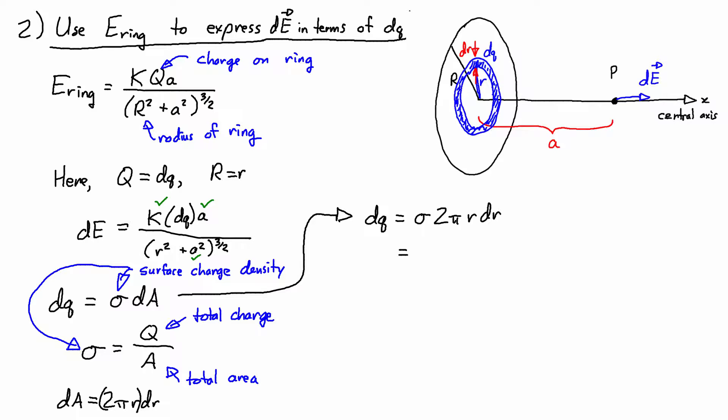When I put these together, I get that dq is equal to sigma times 2 pi r dr. And if I'd like to, I can actually substitute in q over A. These are the total charge on the ring divided by the area of the ring times 2 pi r dr. Then the expression for dE gets substituted, gets this version of dq substituted into it. So I get dE equals ka times q over A, 2 pi r dr,